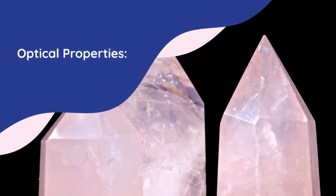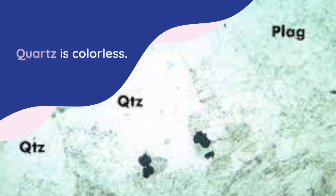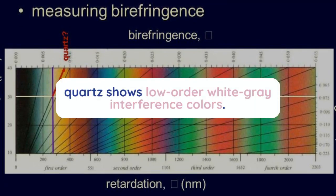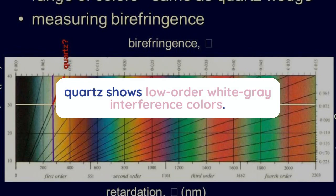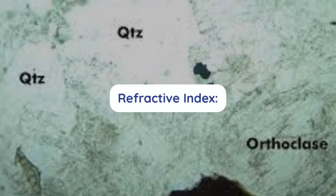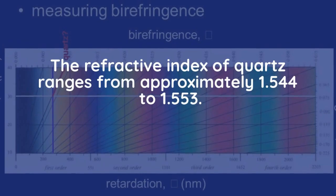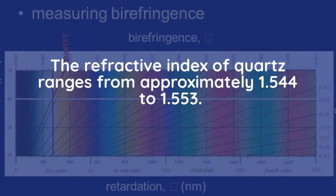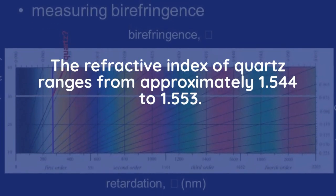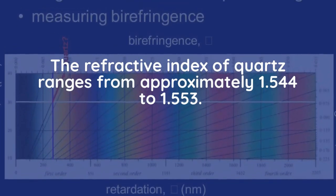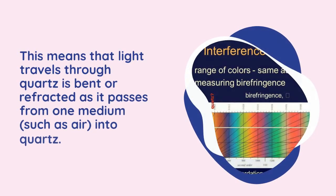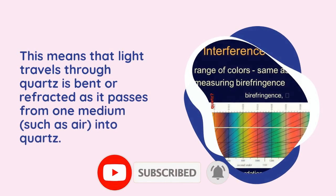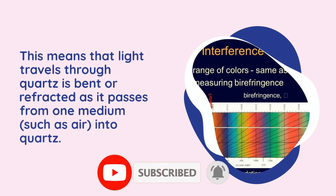Optical Properties. Color: Quartz is colorless. Interference Colors: Quartz shows low-order white-gray interference colors. Refractive Index: The refractive index of quartz ranges from approximately 1.544 to 1.553. This means that light traveling through quartz is bent or refracted as it passes from one medium, such as air, into quartz.